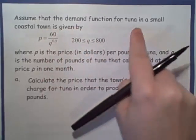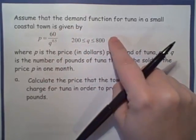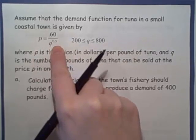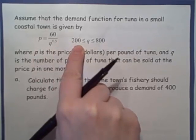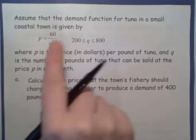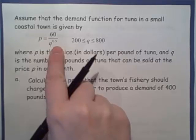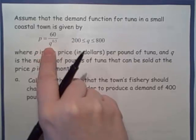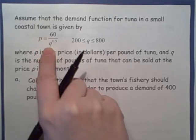So let's read it together. It says, assume that the demand function for tuna in a small coastal town is given by this formula: P equals 60 over Q to the 0.5, where Q needs to be between 200 and 800. Now before we keep reading, one thing I want to point out is notice how we're given our formula, our demand function, differently than we're used to.